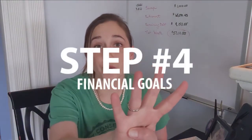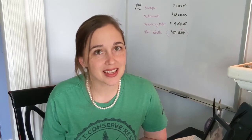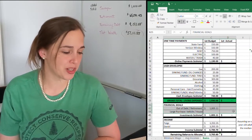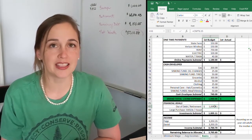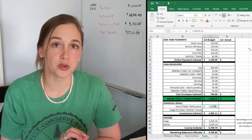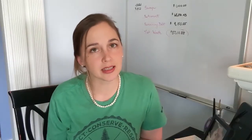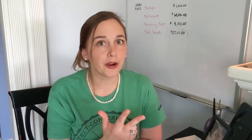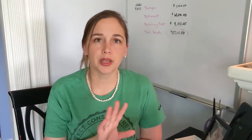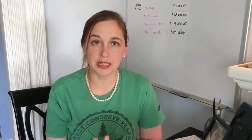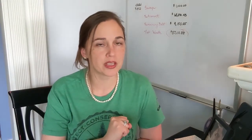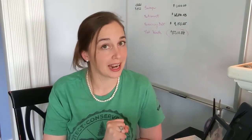Step four is going to be for your financial goals — this is where it gets really exciting. Now in this spreadsheet, I have a default set to 15% going towards your retirement. If you are still in debt, like a car loan, student loans, or credit cards, don't put anything into retirement. You need to focus on getting out of debt. That is the number one focus when you are in debt: get out of debt.